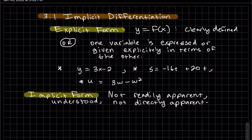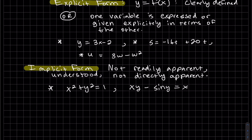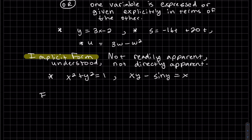Implicit form is not readily apparent, not quite understood, not directly apparent. So we're going to start off with an example and do it both ways.